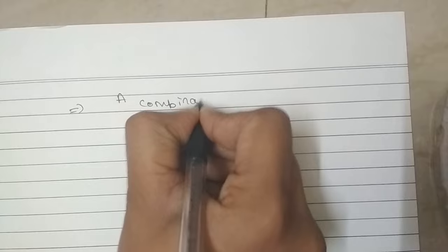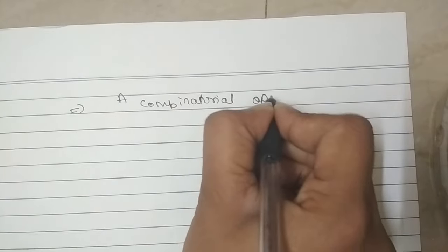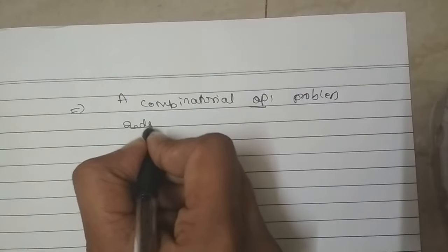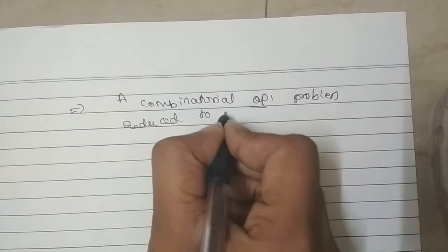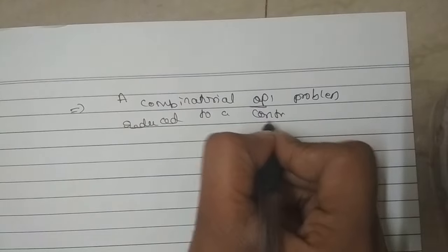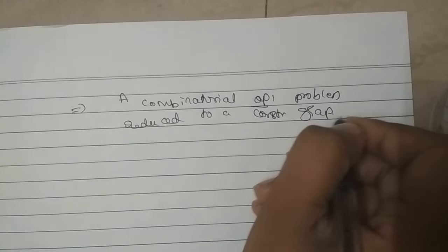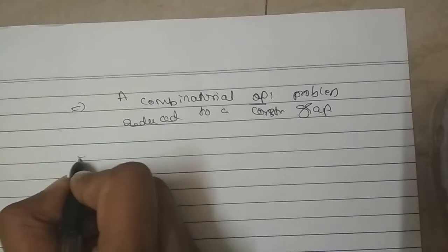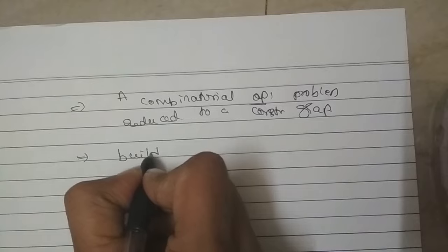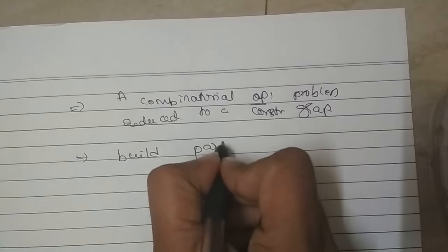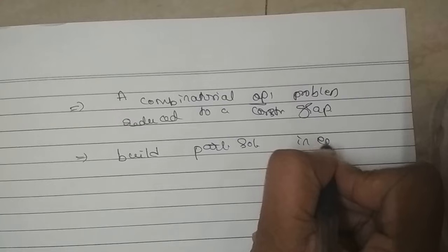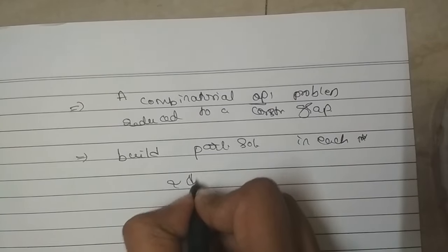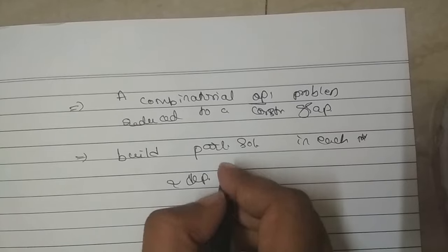It reduced to a construction of the graph. So what ant will do, it will build a partial solution in each iteration and deposit pheromone on each vertex.